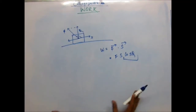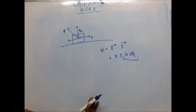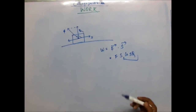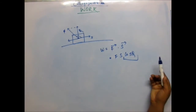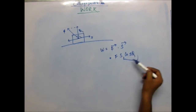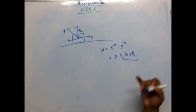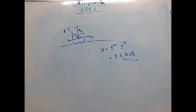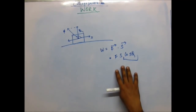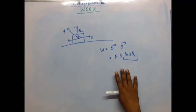Since theta is greater than 90 degrees, and in the second quadrant the value of cosine is negative, cos theta is a negative number, which makes the whole work negative. The work comes out negative whenever the angle between the displacement and force is greater than 90 degrees. Now we'll understand what this negative value means — it has some implication and significance.